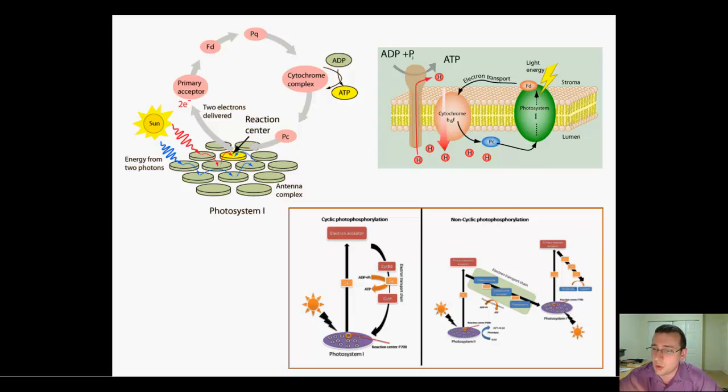Remember that cyclic photosynthesis alone would not be sufficient to power the cell in the long run. From here, we go into the dark reactions or light-independent reactions that happen in the stroma and actually make glucose.